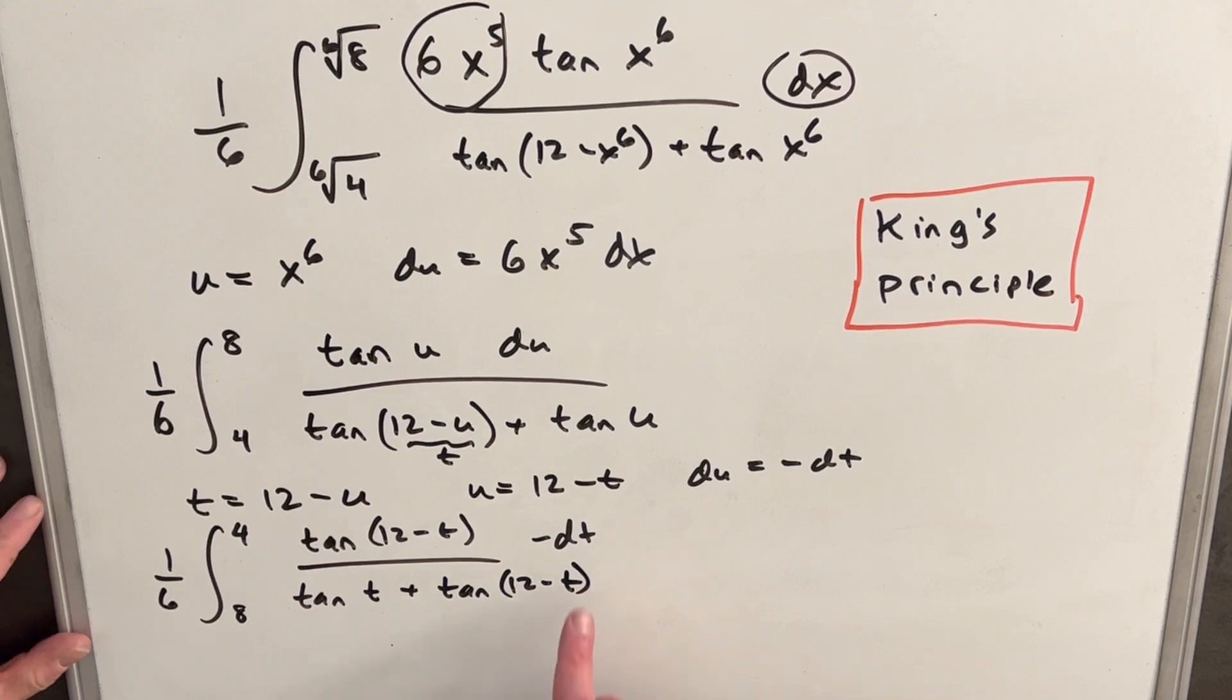Now here there's a couple things I can do. We can use a minus sign, bring it out front, and flip our bounds. So we can get back to 8 over 4. And because in a definite integral, the variable name doesn't matter, I'm going to change this back to u. So let's do that all in one step.